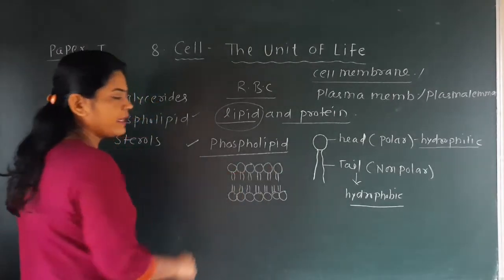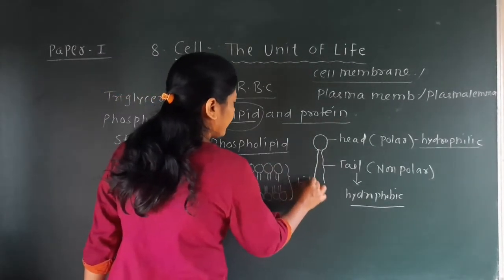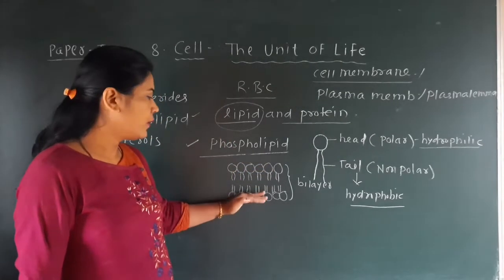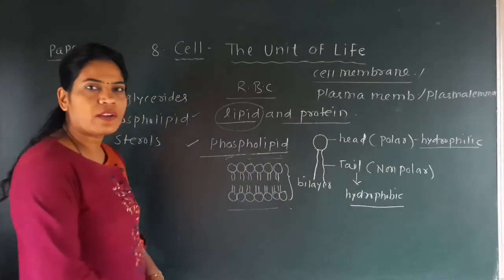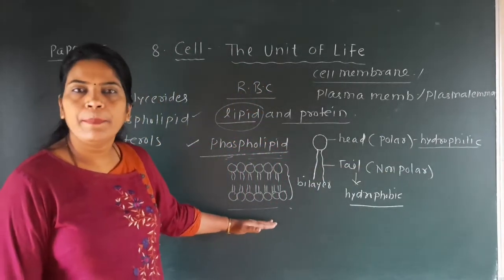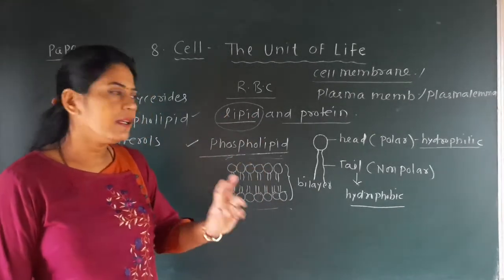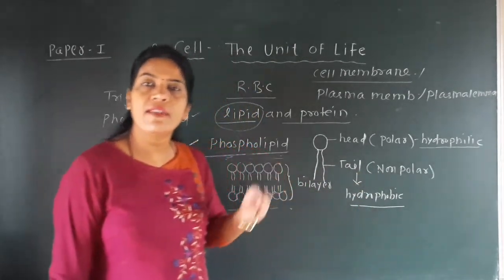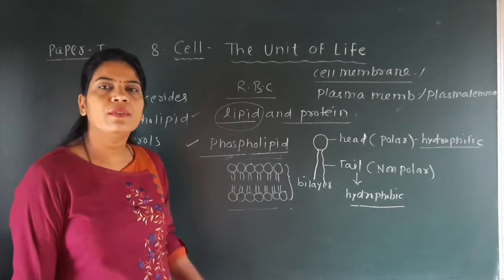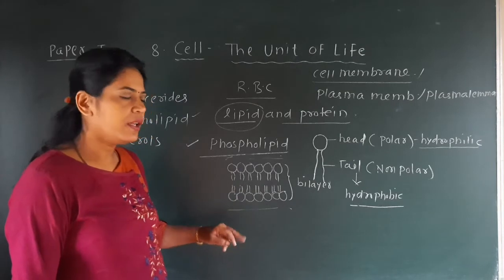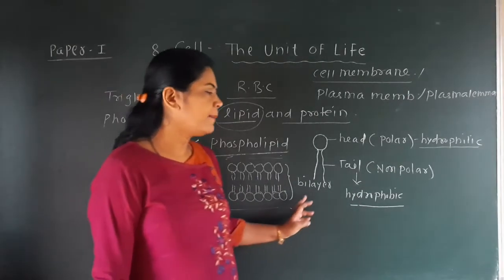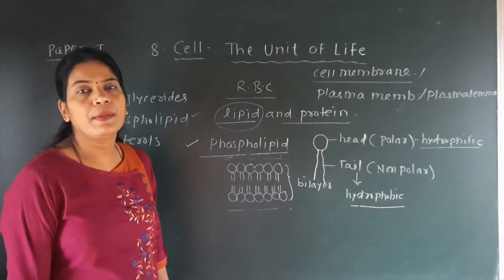In the phospholipid bilayer arrangement in the cell membrane, the head part of the phospholipid faces towards the outer side where the aqueous environment is, where water content is present. That's why the head part is hydrophilic — it is always in contact with the water content outside. The tail part, which we call hydrophobic, is always away from water, so the tail parts face towards each other.